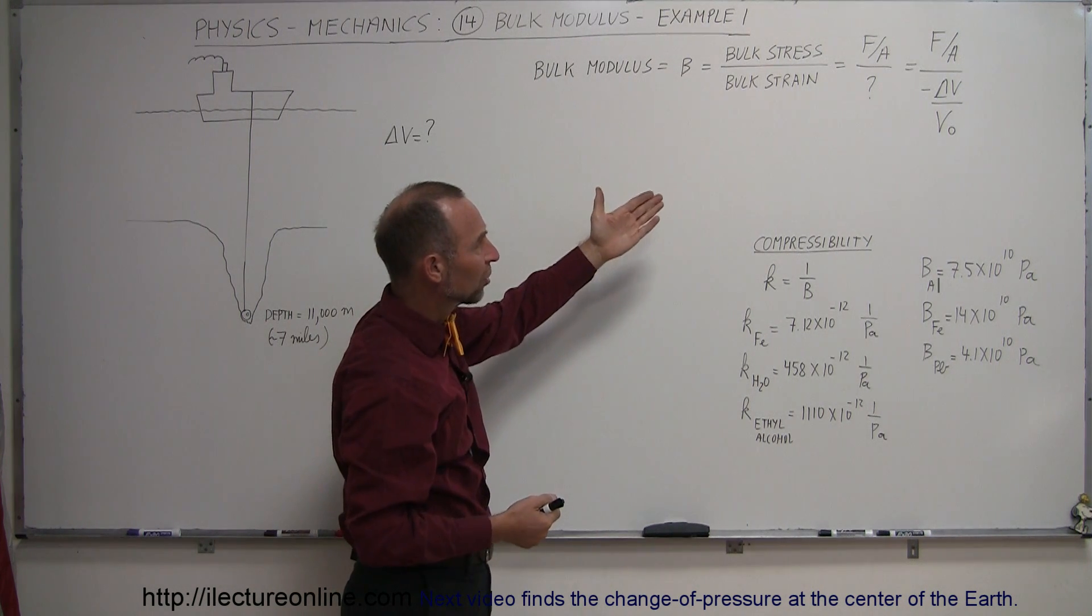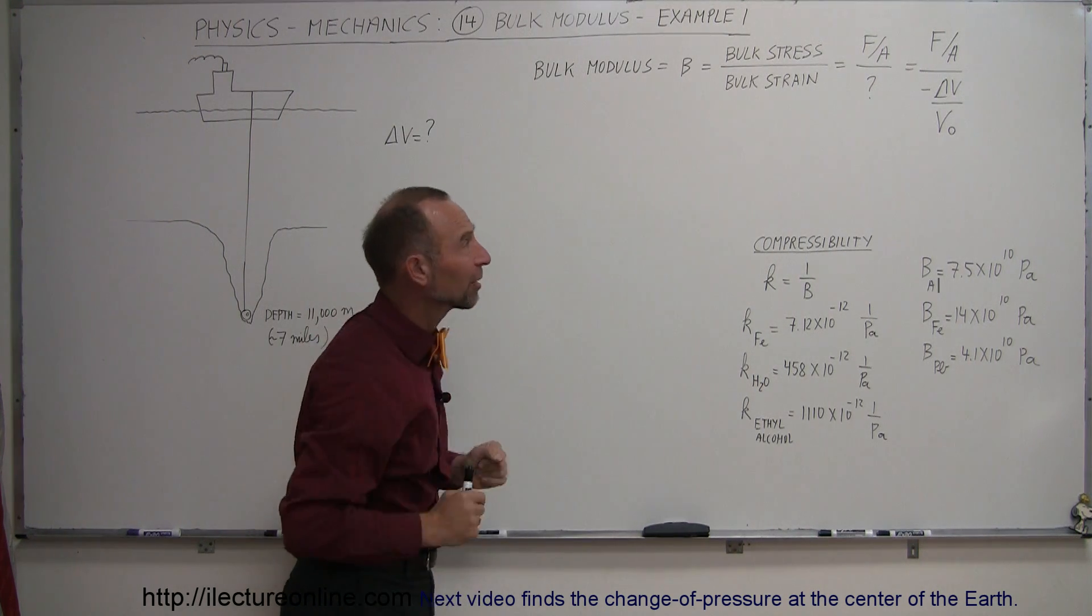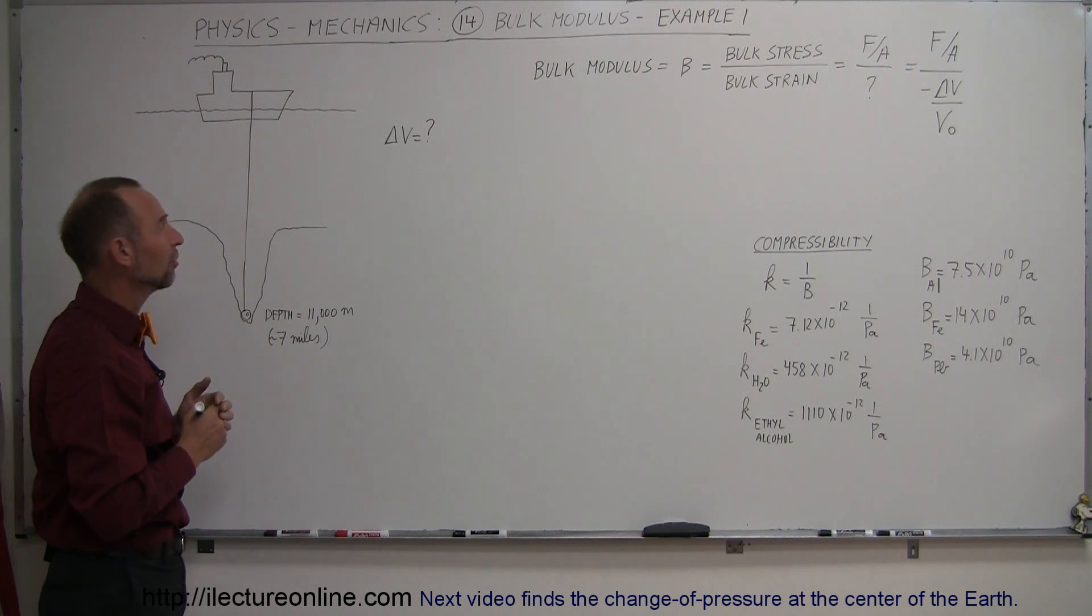And the bulk strain is the ratio of the change in the volume divided by the original volume. Of course, it's negative because the volume gets smaller. It's a negative change in the volume.